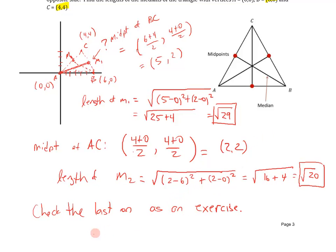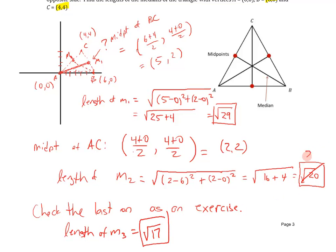Check the last median as an exercise. The answer for the third median is √17. Note that √20 should be simplified to 2√5, which is the preferred form. That's the end of lecture one on distance and midpoint.